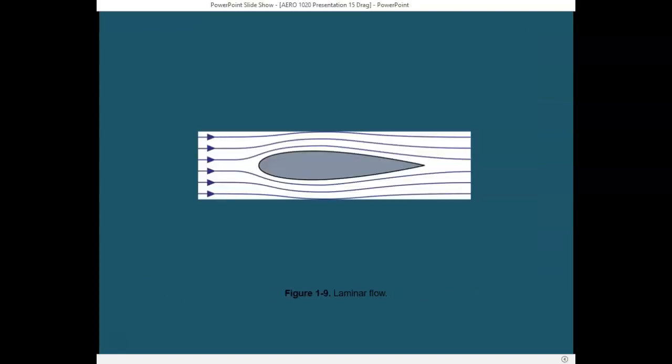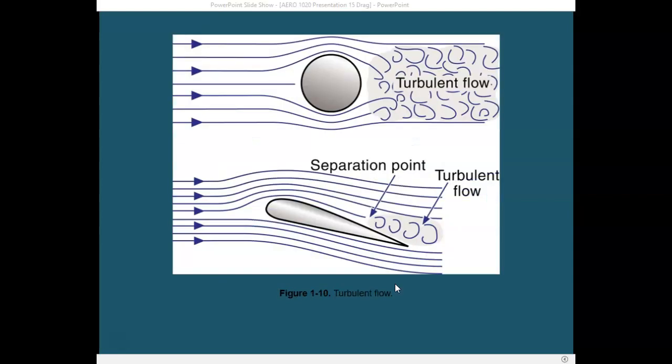Remember laminar flow? Laminar flow is smooth flow of air over an airfoil, and that smooth flow minimizes drag created behind the airfoil. As we increase the angle of attack, we also increase the amount of turbulence produced behind the airfoil. That turbulence starts at the trailing edge, and as the angle of attack is increased, that turbulent flow moves forward closer to the leading edge. The more turbulent flow created, the more drag is created.